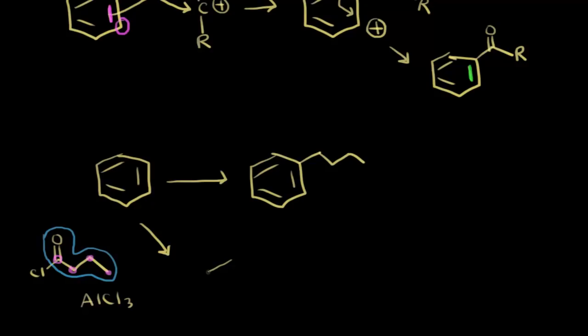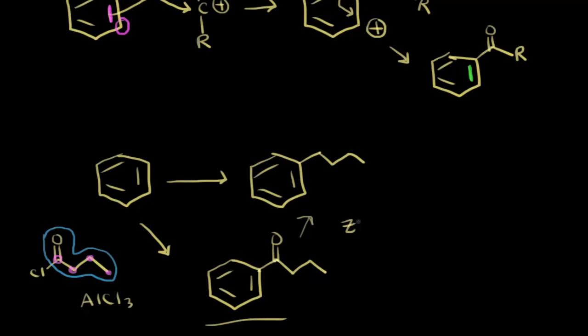Drawing the acylation product: the ring carbon is directly attached to the carbonyl carbon, with 4 carbons total in the chain. Now we need to convert this compound to the target butylbenzene by removing the carbonyl. The Clemmensen reduction is historically used for this — it involves zinc amalgam with mercury and a proton source such as HCl. The zinc amalgam reduces the carbonyl to an alkyl group, giving us the desired butylbenzene in high yield. This two-step sequence — Friedel-Crafts acylation followed by Clemmensen reduction — is more reliable than direct alkylation.